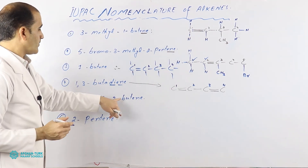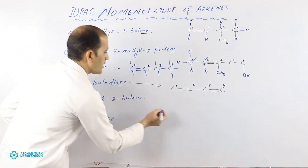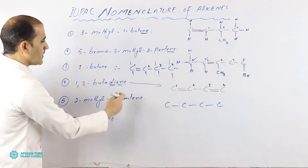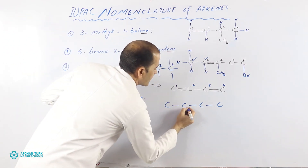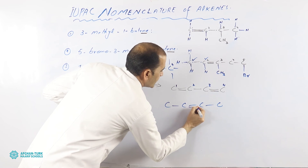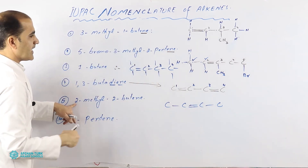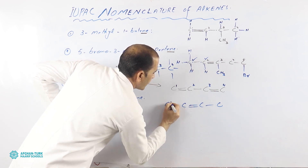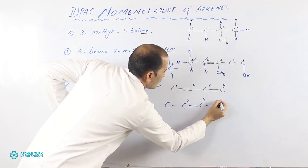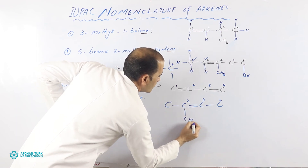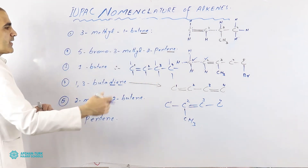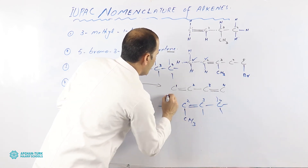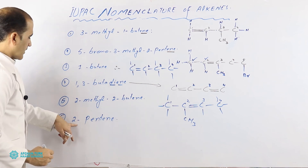The fifth example is 2-methyl-2-butene. 'Butene' means four carbons: one, two, three, four. '2' means on the second carbon there is a double bond. '2-methyl' means on the second carbon you also attach a methyl group, CH3. You can then attach all the remaining carbon atoms with hydrogen atoms in the same way as before.